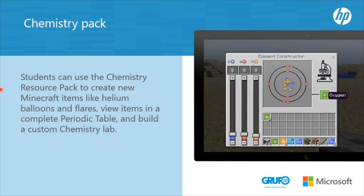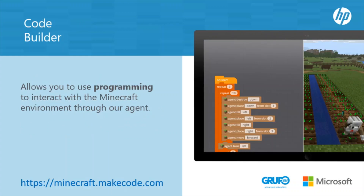Chemistry Pack: students can use the Chemistry Resource Pack to create new Minecraft items like helium balloons and flares, view items in a complete periodic table, and build a custom chemistry lab. The elements of the Chemistry Package are: Compound Creator, Element Builder, Laboratory Table, Material Reducer, and Code Builder. Code Builder allows you to use programming to interact with the Minecraft environment through the agent. Press the C key to activate. For example, you can program the agent to create a garden.